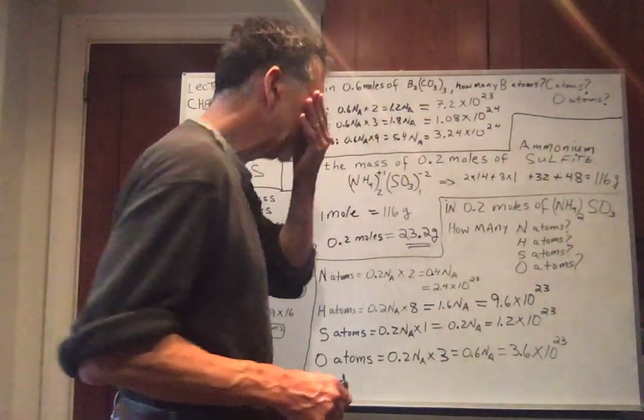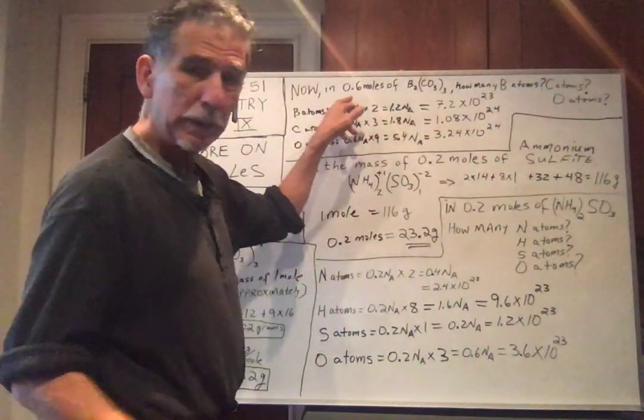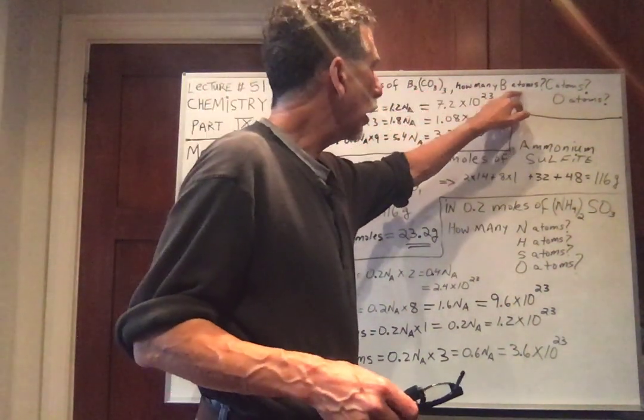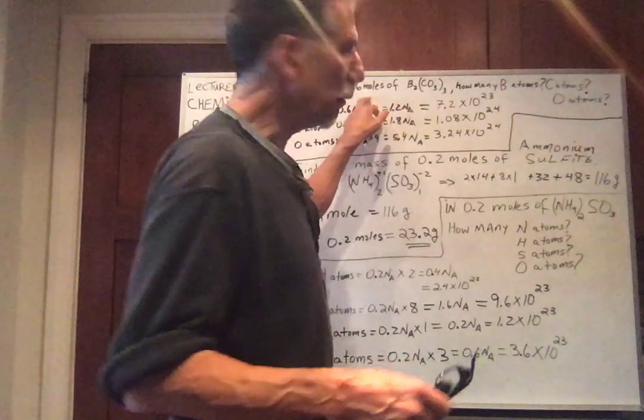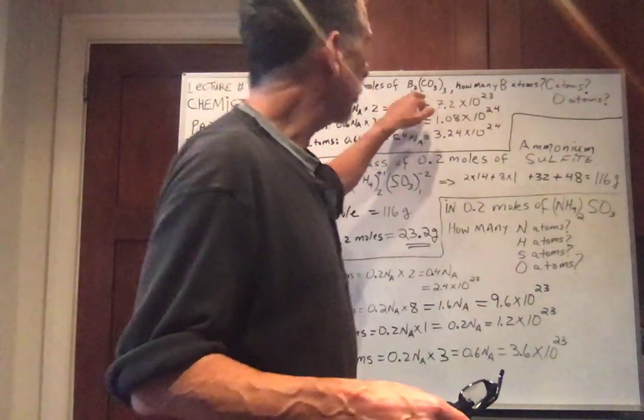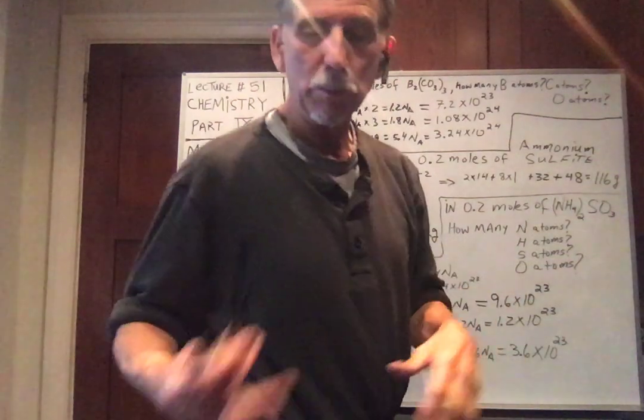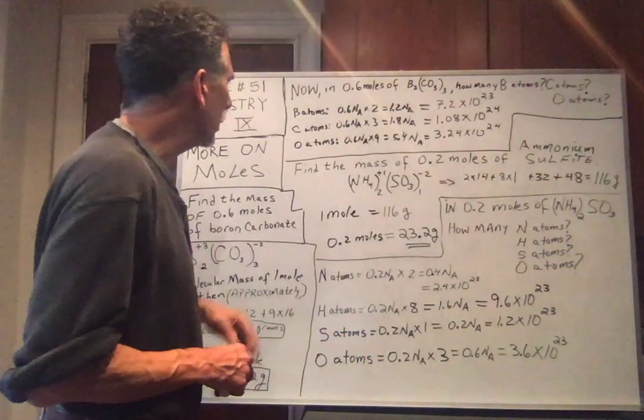Let's continue some of the other questions I asked. Now in 0.6 moles of boron carbonate. How many boron atoms? How many carbon atoms? How many oxygen atoms? So remember from the last video how we did this?